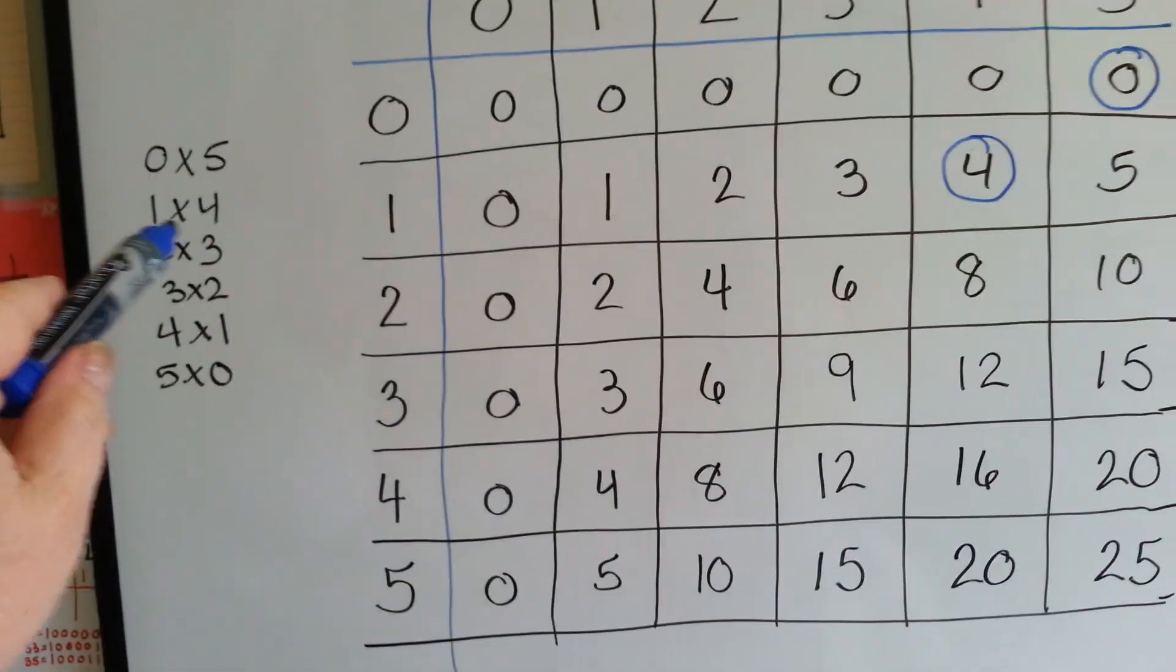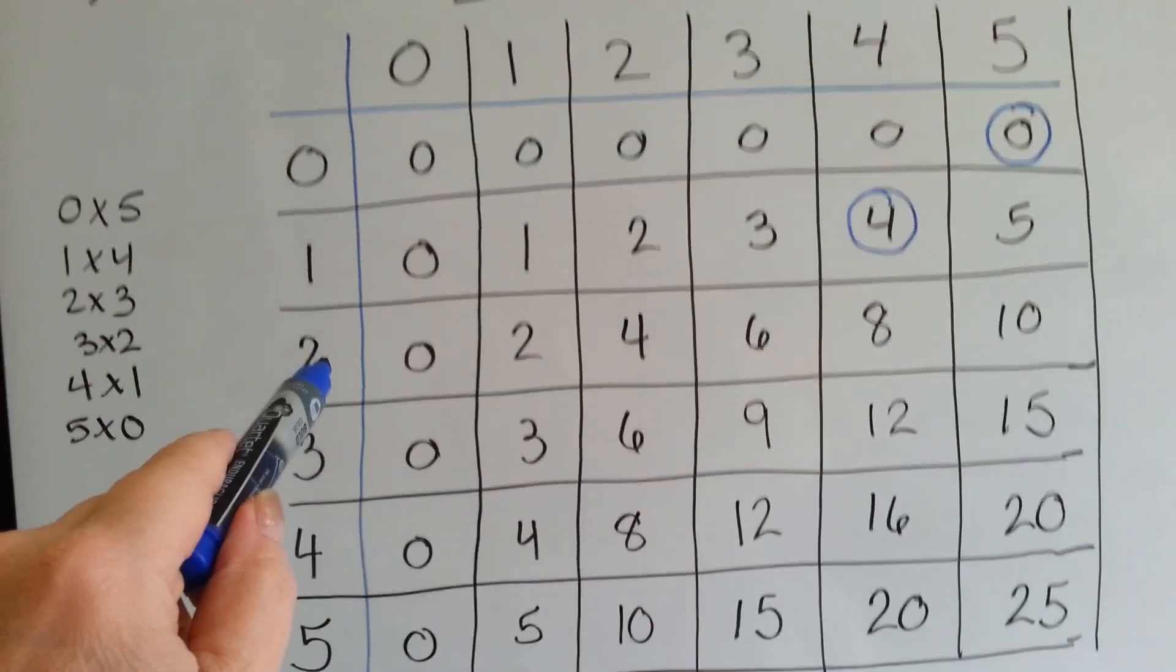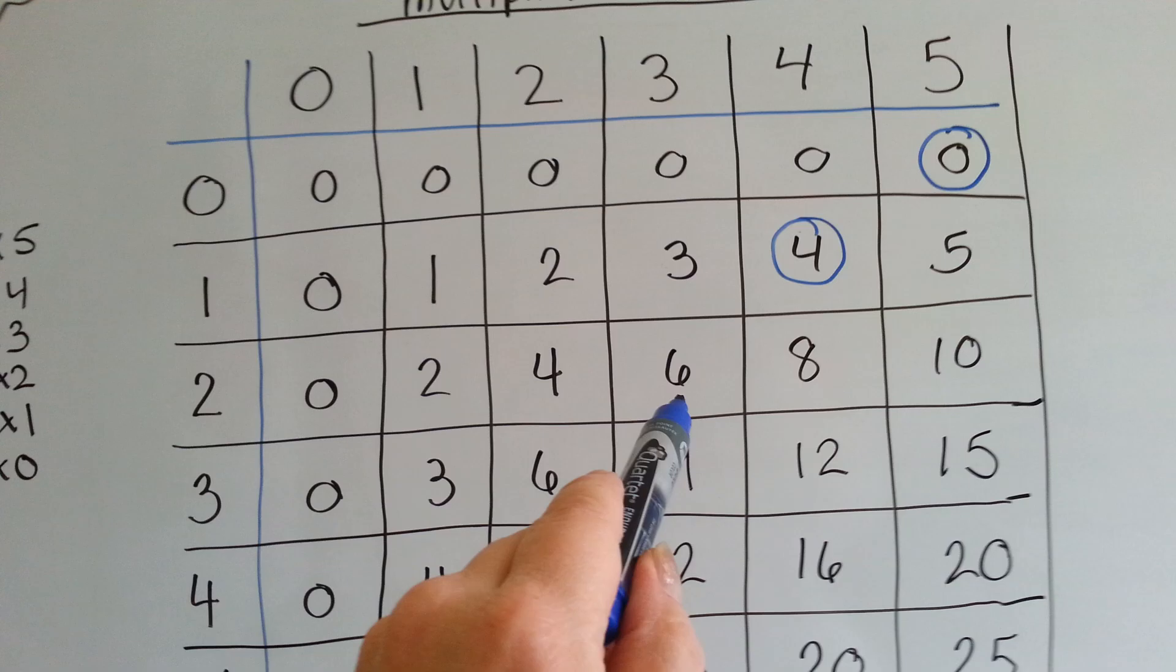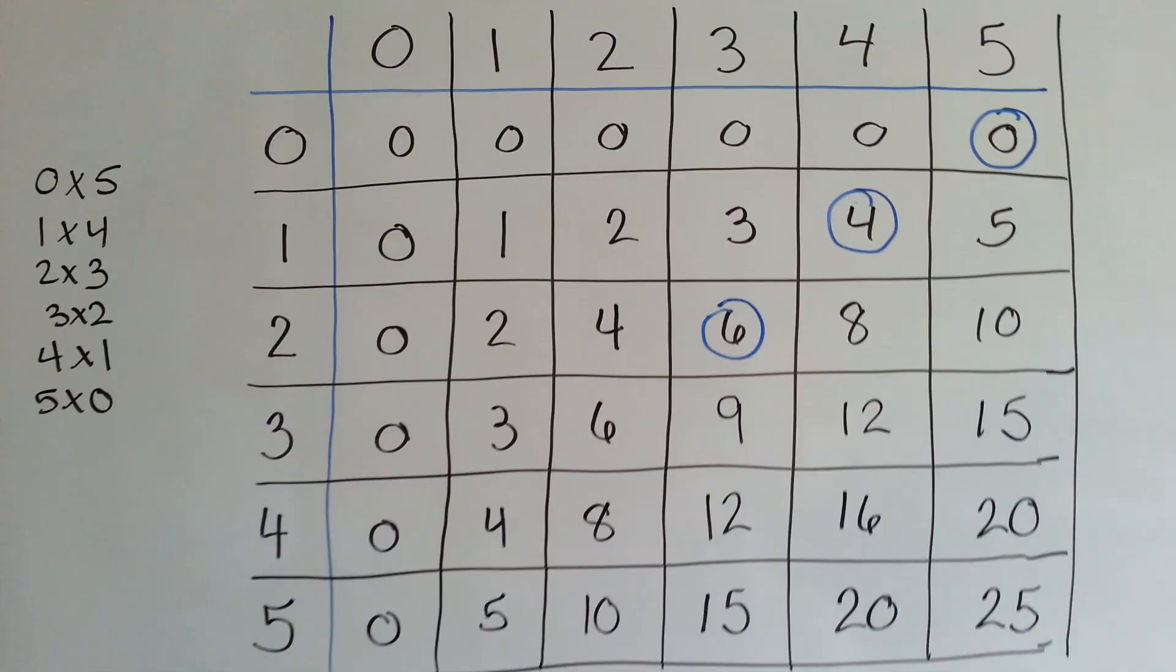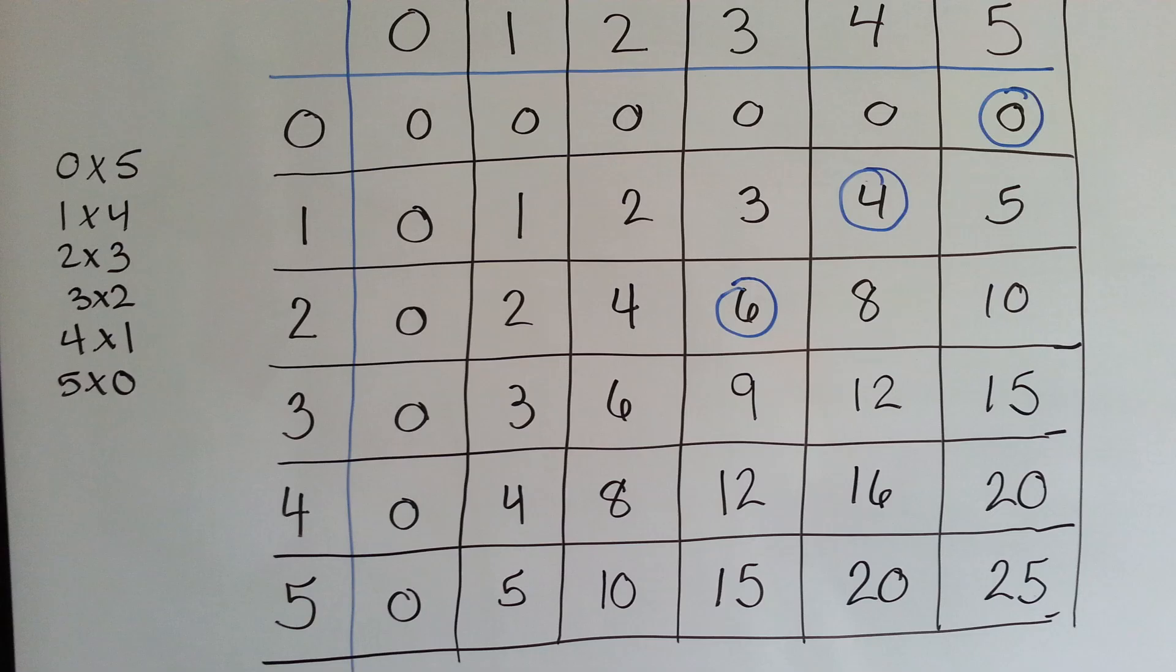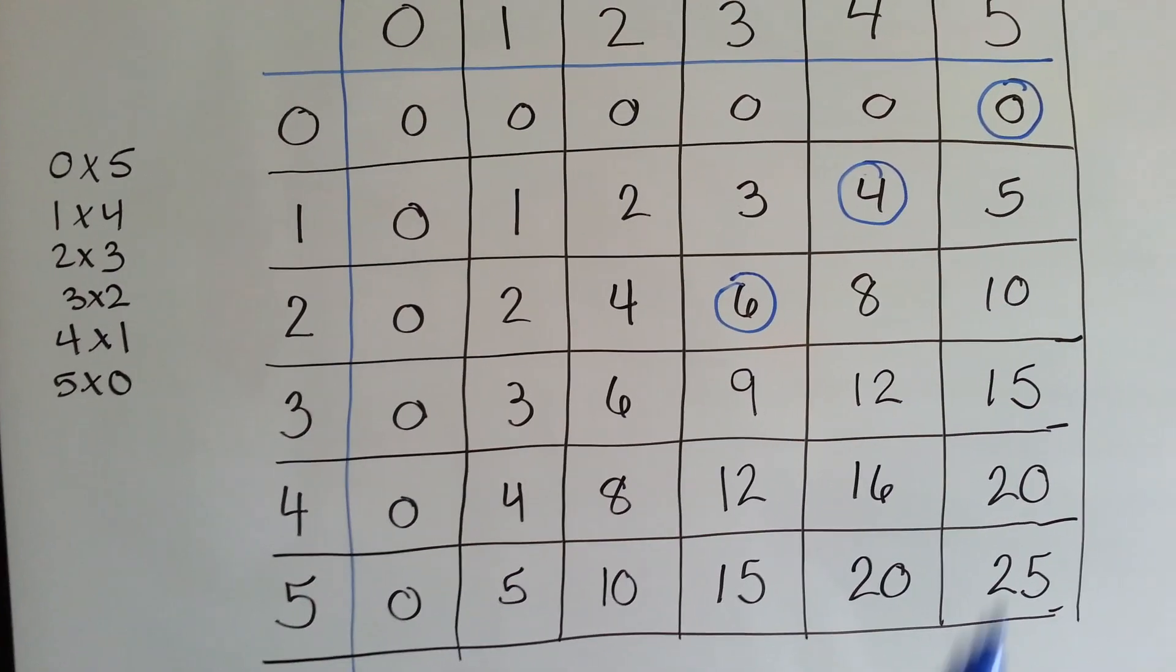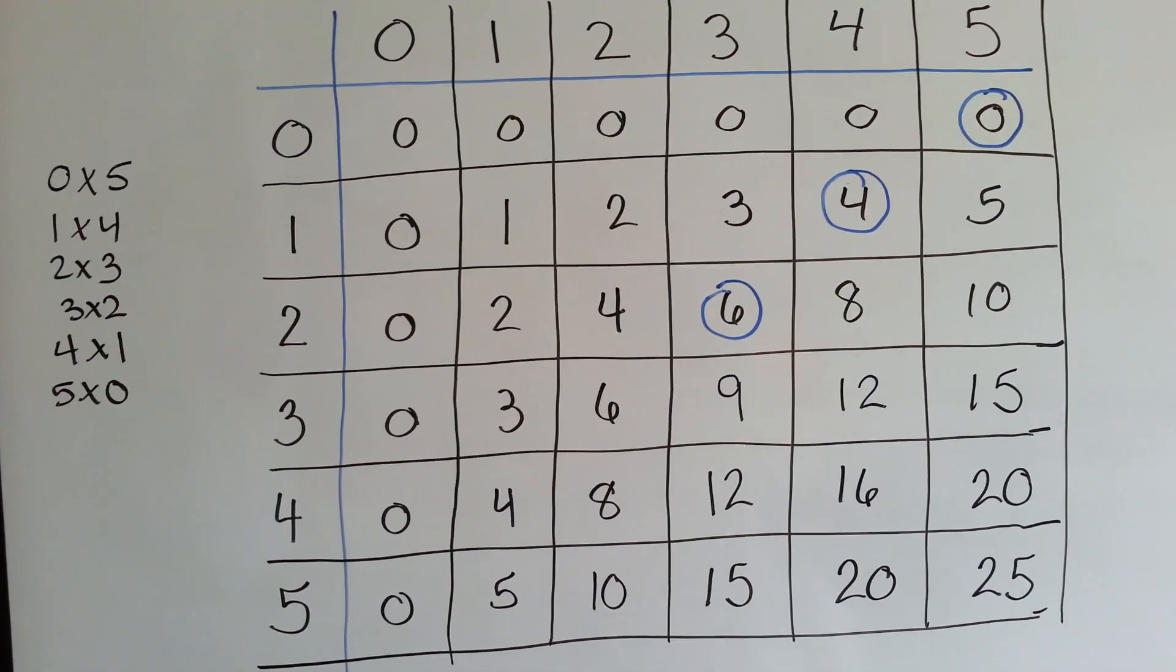The next one is 2 times 3. 2 times 3. Do you see the pattern that's happening? Can you already tell what's going to happen? What number do you think is going to be the next one I circle? Just from what you see is happening, can you tell what the pattern is that I'm making?